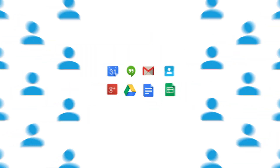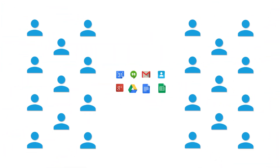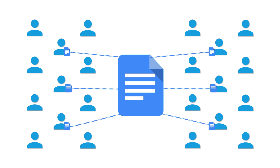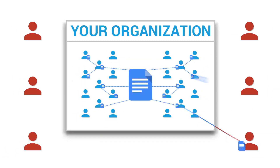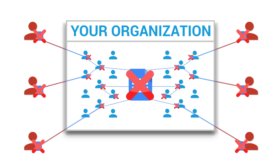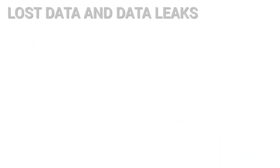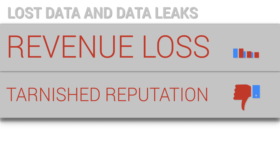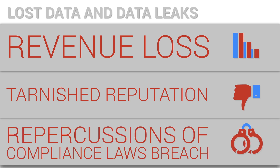Using Google Apps has allowed your organization to collaborate and share knowledge in new and powerful ways. But when so many people have access to the same source document, how do you keep sensitive information inside your organization? And if one person's copy of a file is deleted, everyone's copy is deleted. Lost data or data leaks lead to revenue loss, tarnished reputation, or repercussions of compliance laws breach.